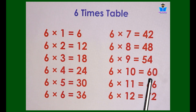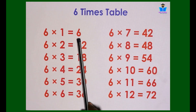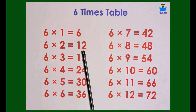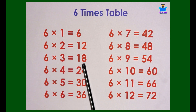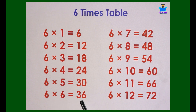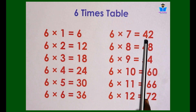6 elevens are 66. 6 twelves are 72. 6 ones are 6. 6 twos are 12. 6 threes are 18. 6 fours are 24. 6 fives are 30. 6 sixes are 36. 6 sevens are 42.